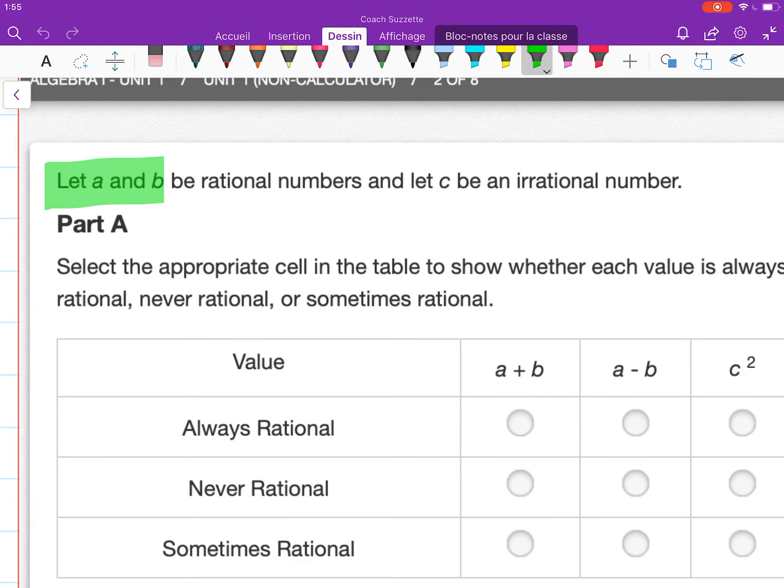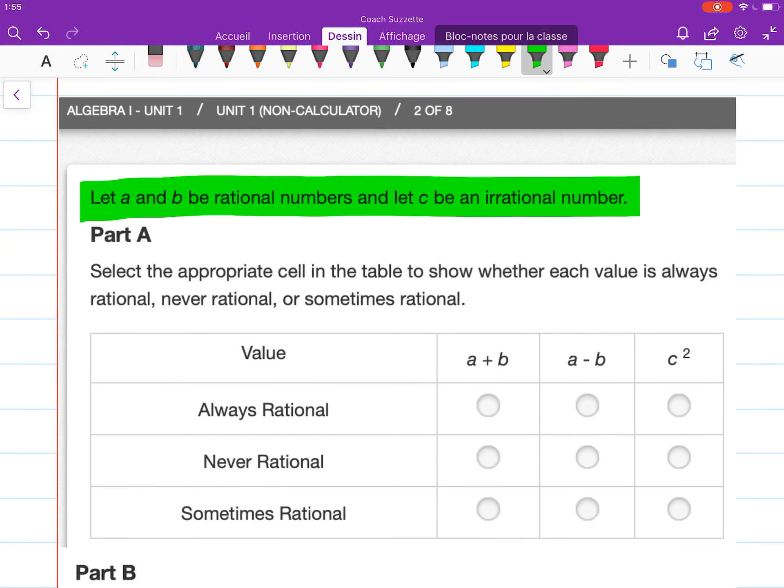We are given: let A and B be rational numbers and let C be an irrational number. Select the appropriate cell in the table to show whether each value is always rational, never rational, or sometimes rational.